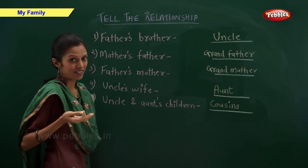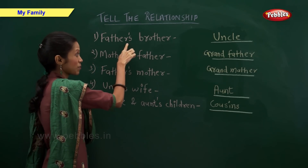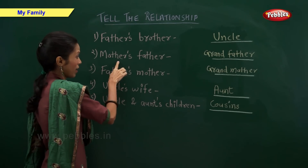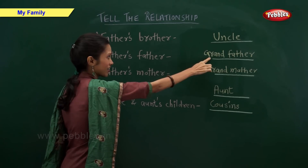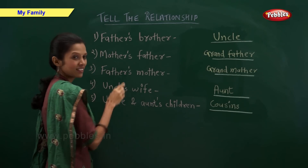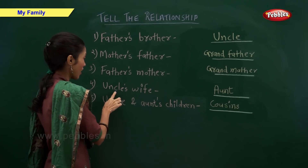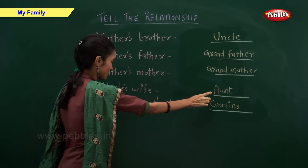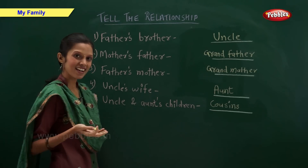Now let us summarize the relationships. Father's brother: uncle. Mother's father: grandfather. Father's mother: grandmother. Uncle's wife: aunt. Uncle and aunt's children: cousins.